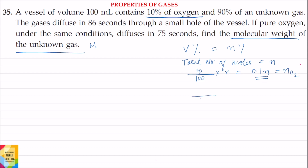Similarly, out of 100 moles, 90 moles is the unknown gas. Therefore, out of N moles, the number of moles of unknown gas will be 90/100 into N, and this is equal to 0.9N moles. This is equal to the number of moles of the unknown gas. Let it be Nx.